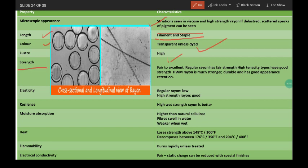Its strength is fair to excellent. Regular rayon has fair strength. High tenacity types have good strength, and HWM rayon is much stronger, durable, and has good appearance retention. Elasticity is high for HWM rayon and low for regular rayon.